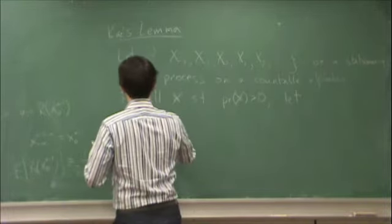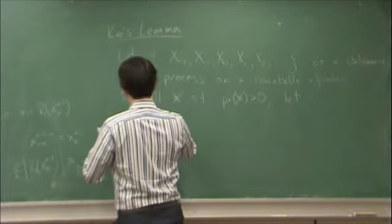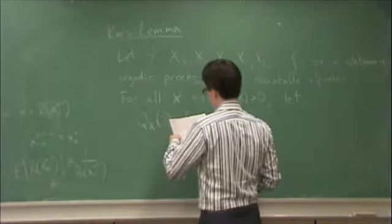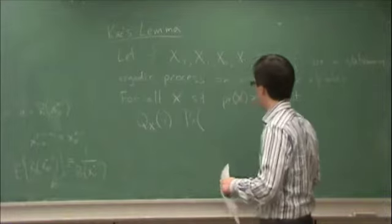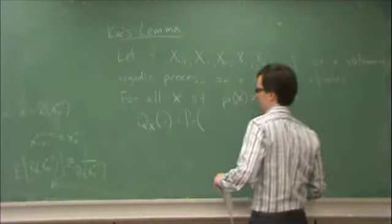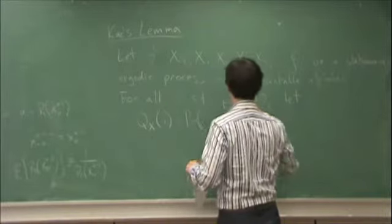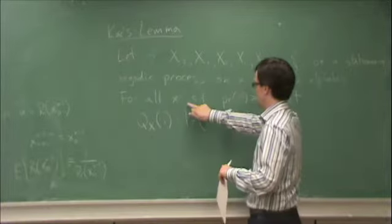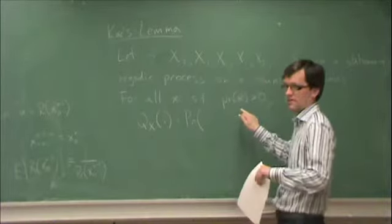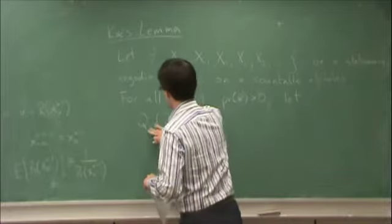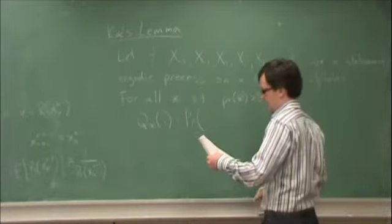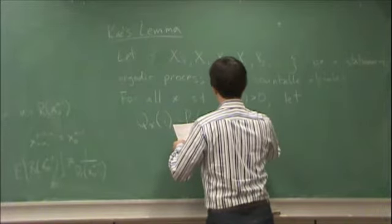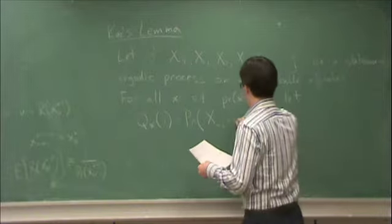Let q_x(i) be the probability—this should actually be lowercase x. This is for a particular value that's possible in this sequence, such that the probability of that particular value is greater than zero.